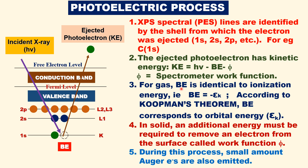For gaseous substances, binding energy equals ionization energy. According to Koopmans' theorem, binding energy equals the negative of orbital energy — for example, binding energy equals minus K shell energy. However, in solid bulk matter, an additional energy must be supplied to remove an electron from the surface; that is called the spectrometer work function, φ. During this process, a small amount of Auger electrons are also emitted.